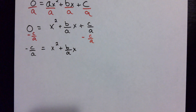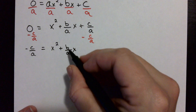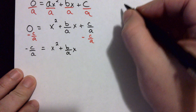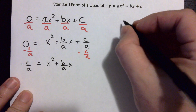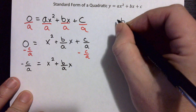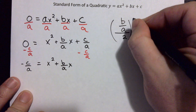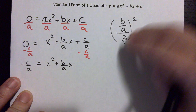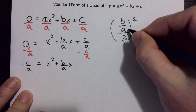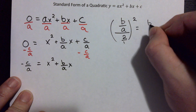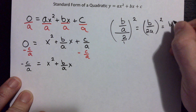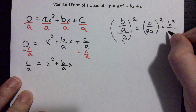Now we have it in the proper form to complete the square. To complete the square, you take the coefficient in front of x, which is b/a, divide it by 2, and square it. So: (b/a) ÷ 2, squared. Putting 2 over 1, when you have a fraction over a fraction you flip the bottom and multiply, so b/a divided by 2 becomes b/(2a), still squared. That equals b² divided by 4a².